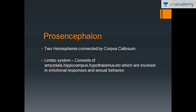The limbic system consists of the amygdala, the hippocampus, and the hypothalamus, which are involved in emotional responses and sexual behavior. So the constituents of the limbic system are the amygdala, hippocampus and hypothalamus — this is what you need to remember at this level.